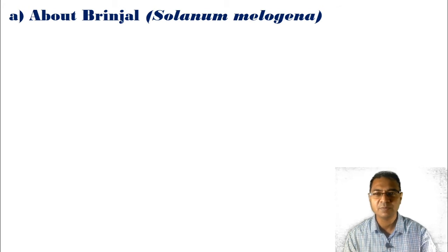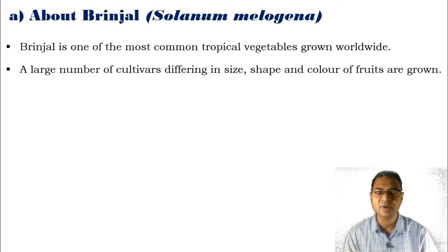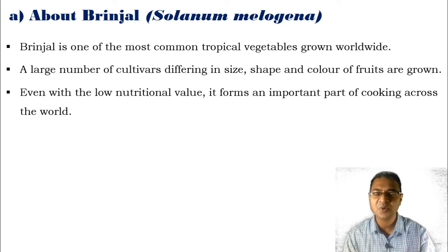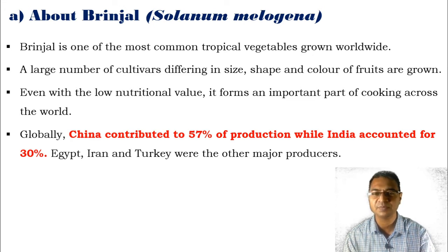First, moving toward the brinjal plant, named Solanum melongena. Brinjal is one of the most common tropical vegetables grown all over the world. A large number of cultivars are grown worldwide in different shapes, sizes, and color patterns. Globally, as per productivity, China contributes around 57% while India contributes around 30%.